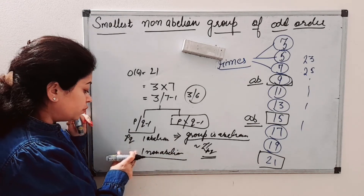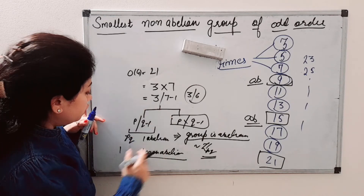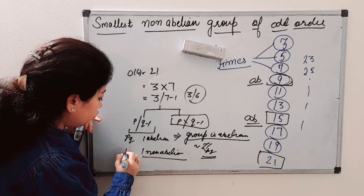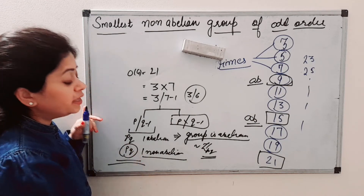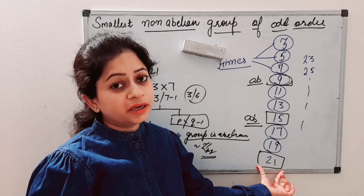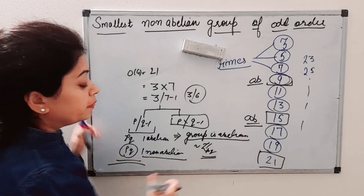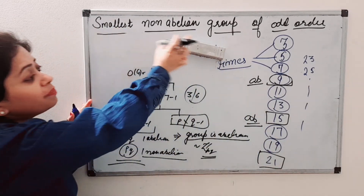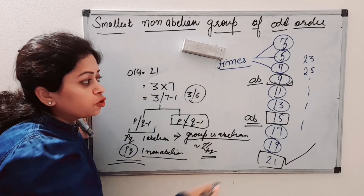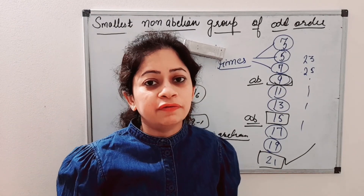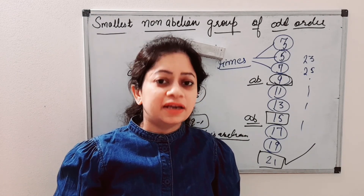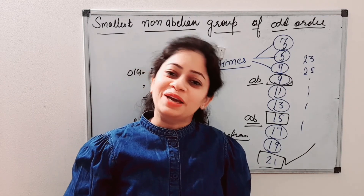So for the group of order 21, up to isomorphism, we have one non-abelian group. That means the smallest non-abelian group of odd order has order 21, because before 21 all odd-order groups were abelian. I hope you got it — please subscribe to my channel and visit for more videos on modern algebra, real analysis, and differential equations. Thank you so much for watching!